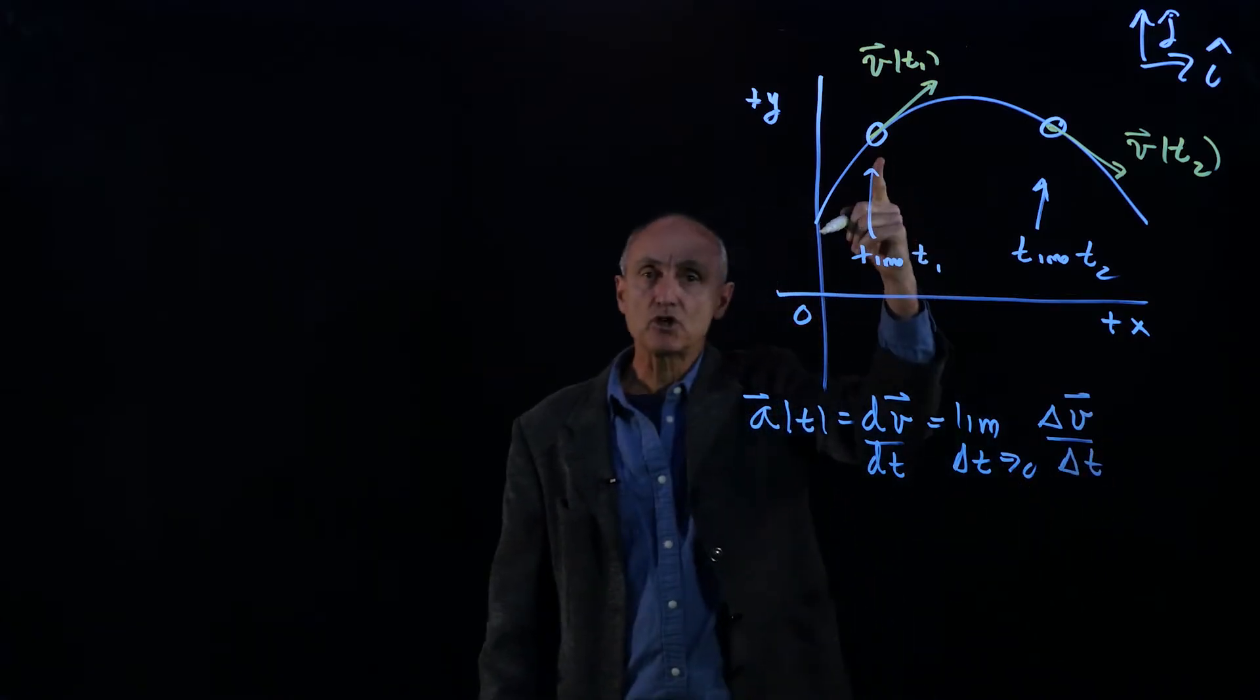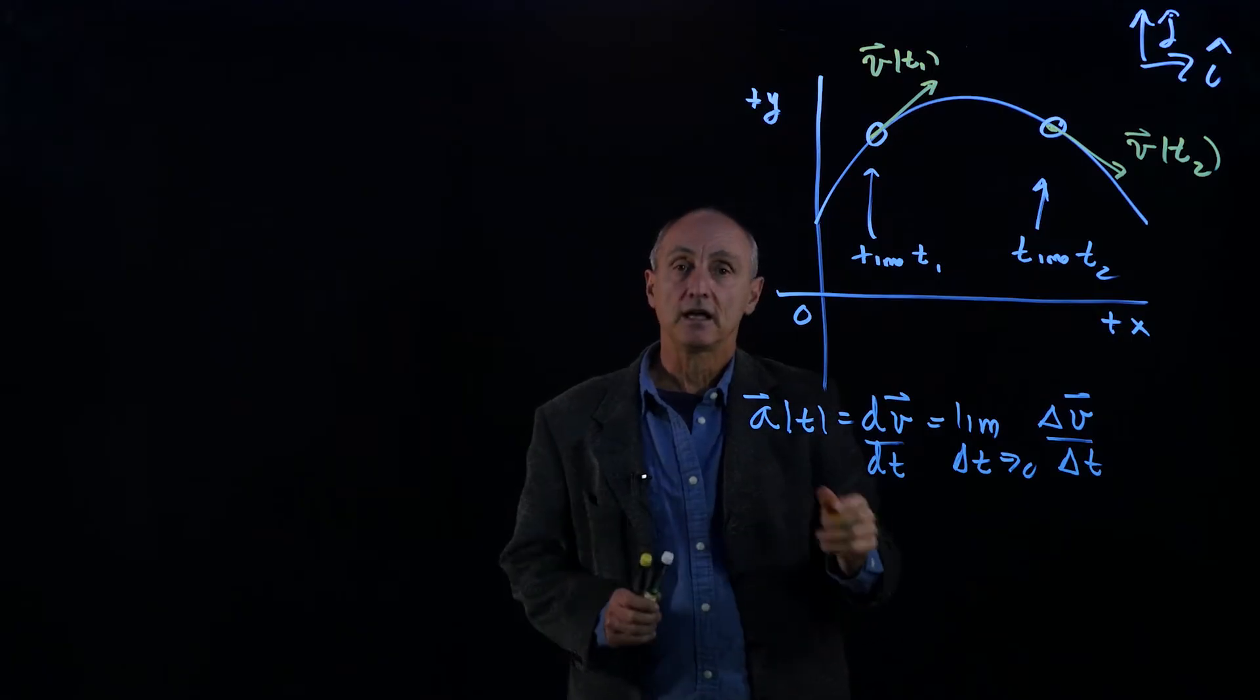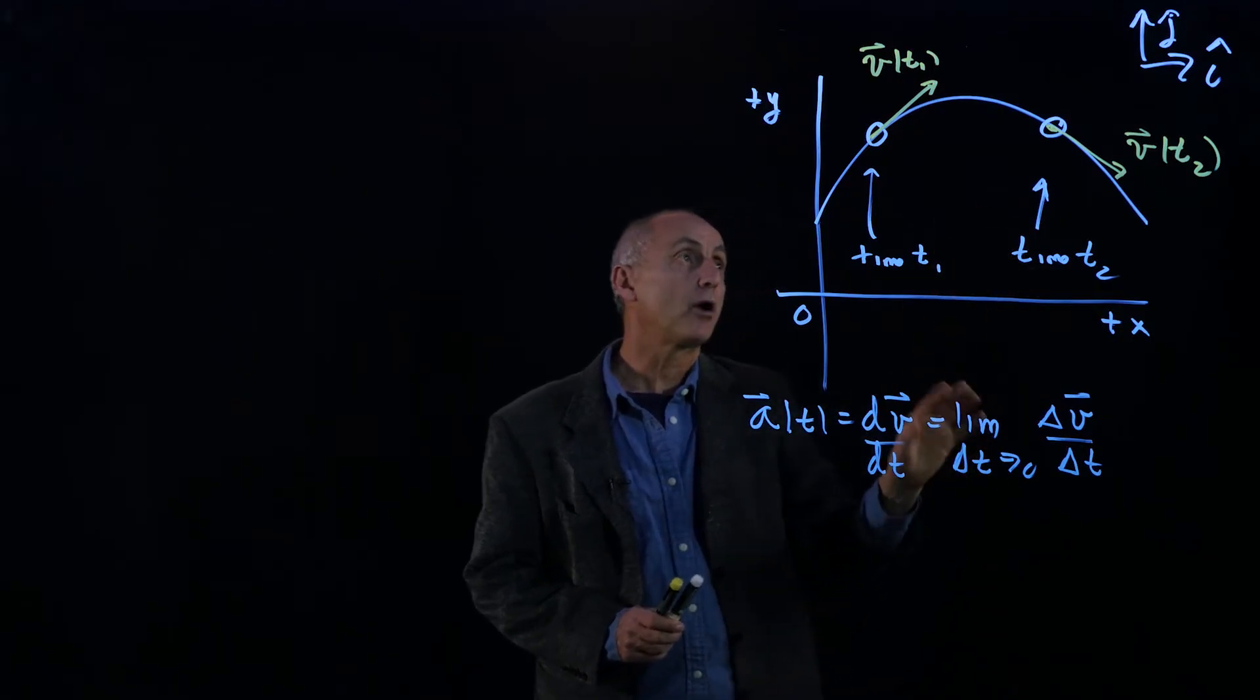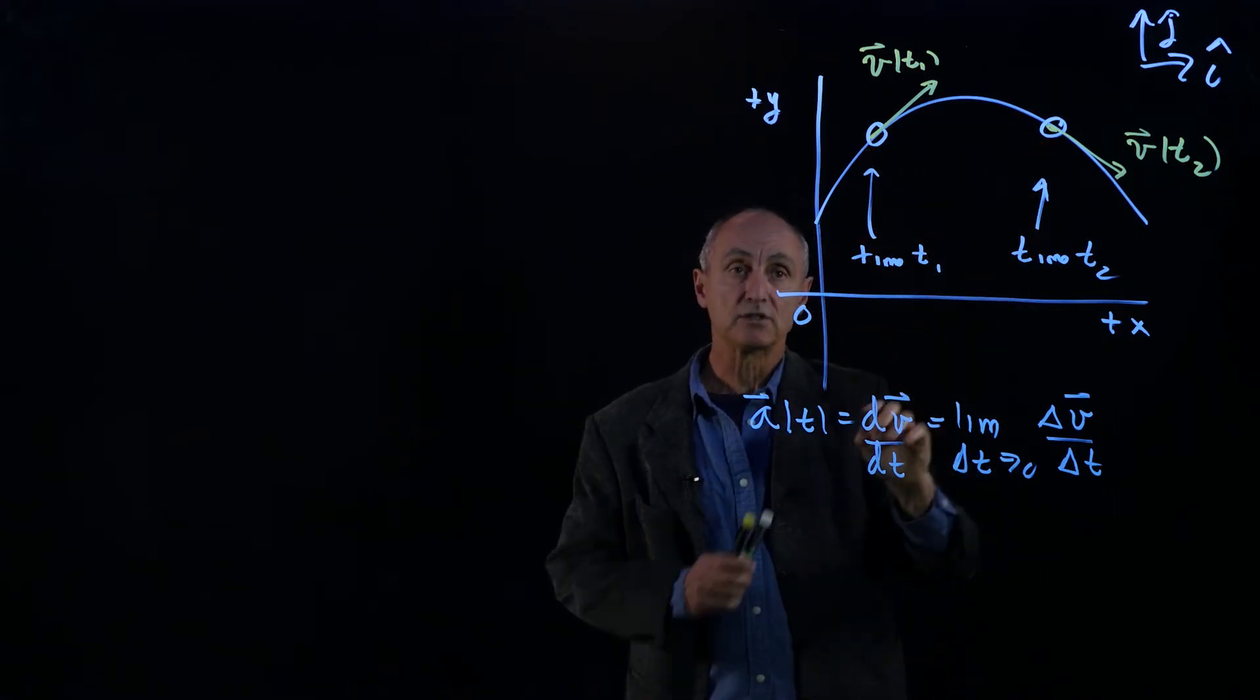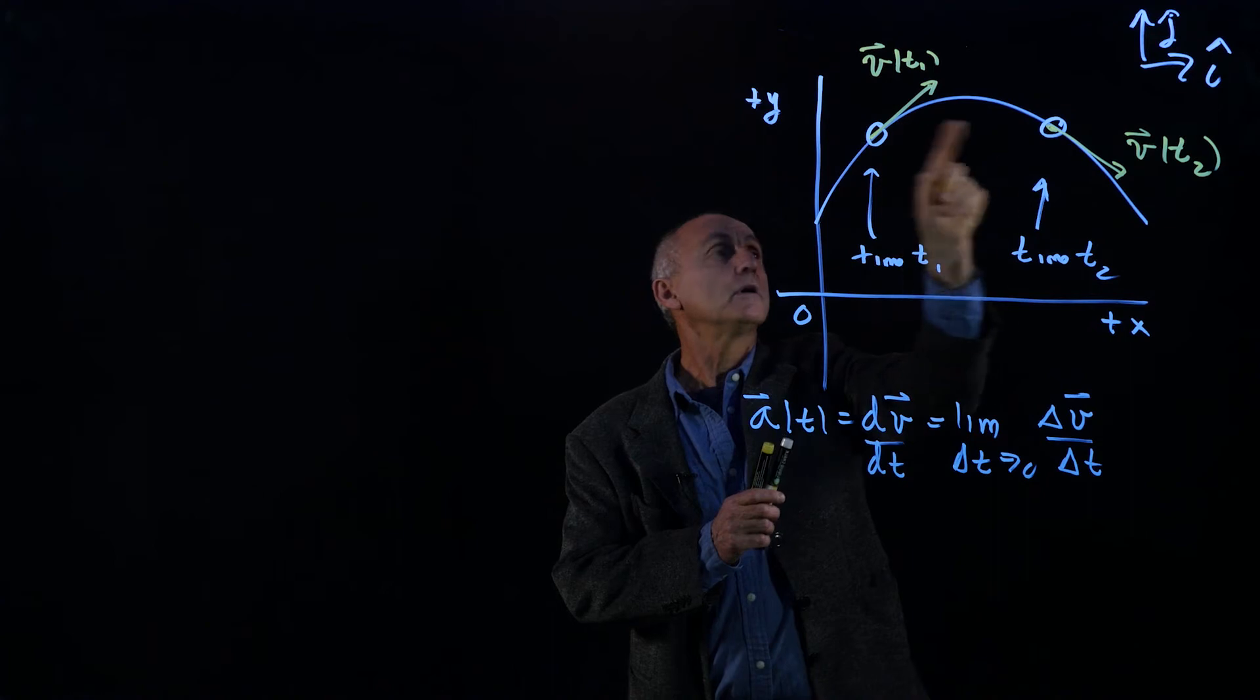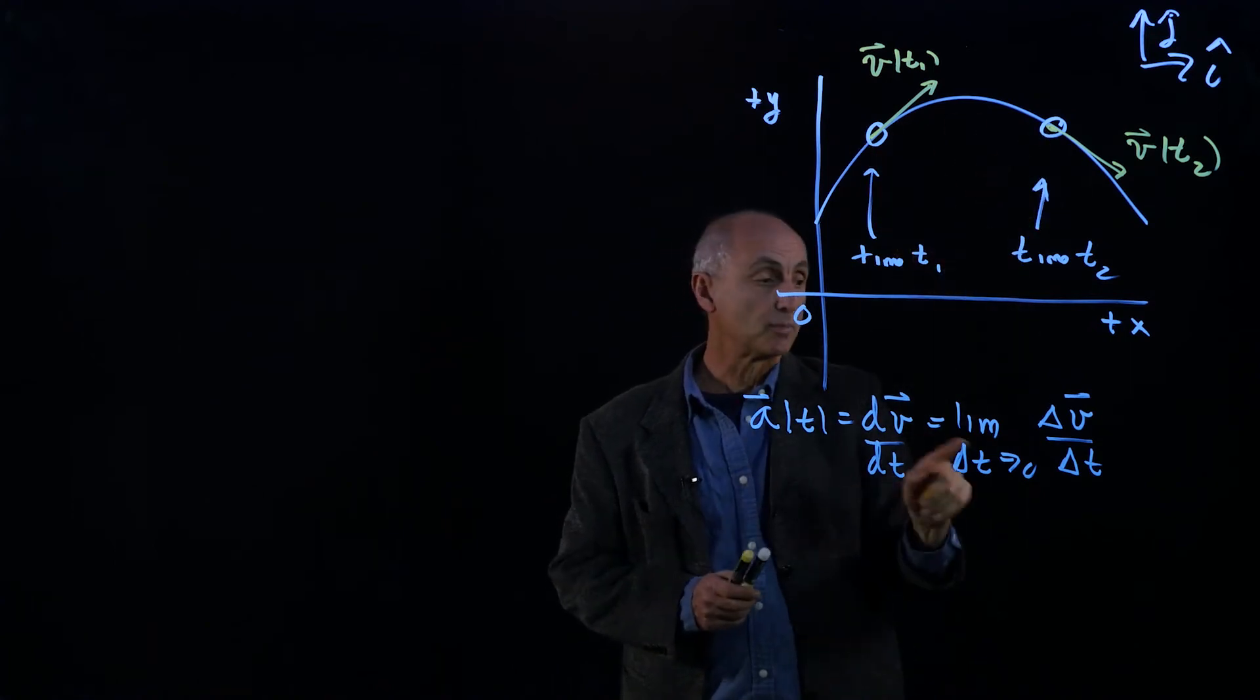Now, it's much harder to visualize the delta v in this drawing. And partly the reason for that is these velocity vectors are located at two different points. And right now, the backs of these vectors have different places in space.